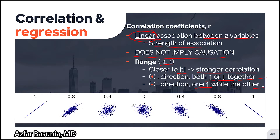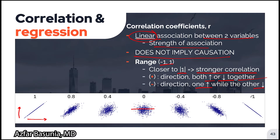The figure below shows multiple scatter plots between two variables and their respective correlation coefficients. When the correlation coefficient is zero, the best-fit line is almost horizontal, where an increase in the x variable causes no change in y. As the correlation coefficient increases in magnitude, the relationship grows stronger and points get closer to a straight line. With positive coefficients, as x increases, y also increases; with negative coefficients, as x increases, y decreases.